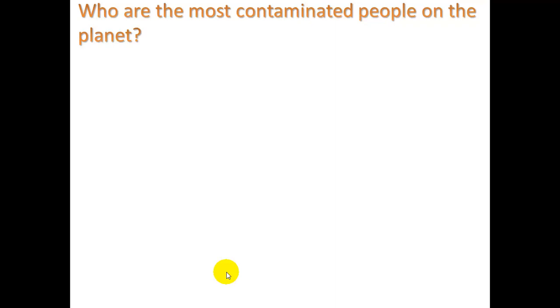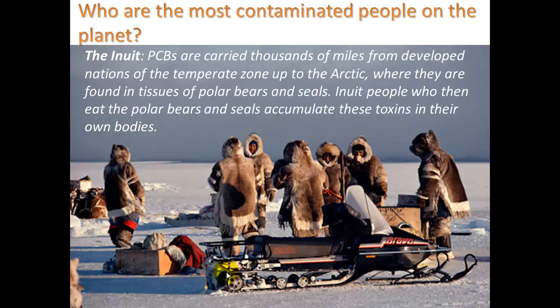So who are the most contaminated people on the planet? You might think it would be people living in cities, but au contraire — it's the Inuit, the Native Americans of Northern America and the Arctic area. PCBs, a certain class of chemical toxicant, are carried thousands of miles from developed nations in the temperate zone up to the Arctic, where they are found in the tissues of polar bears and seals. Inuit people who eat the polar bears and seals accumulate these toxins in their own bodies. Ironically, they are the ones least using technology, yet most affected by it in terms of their health.